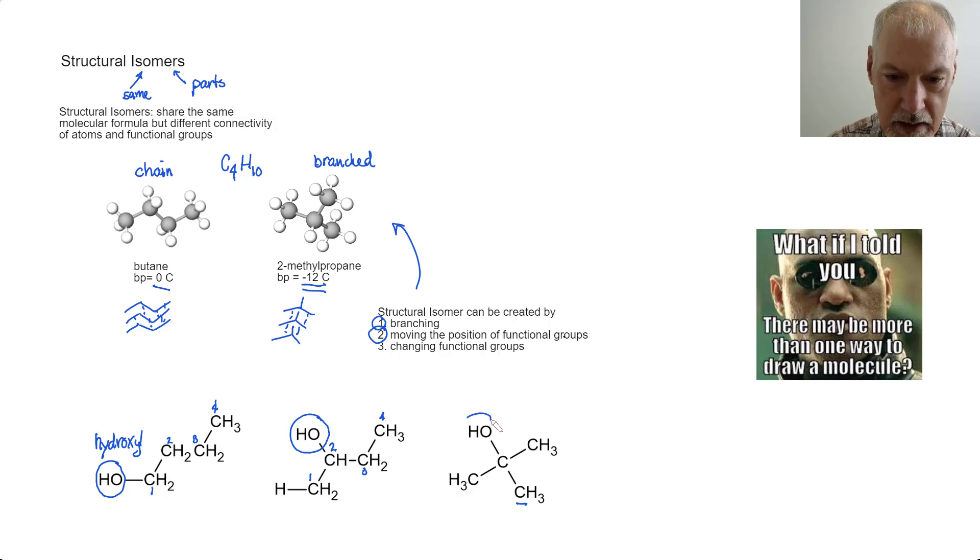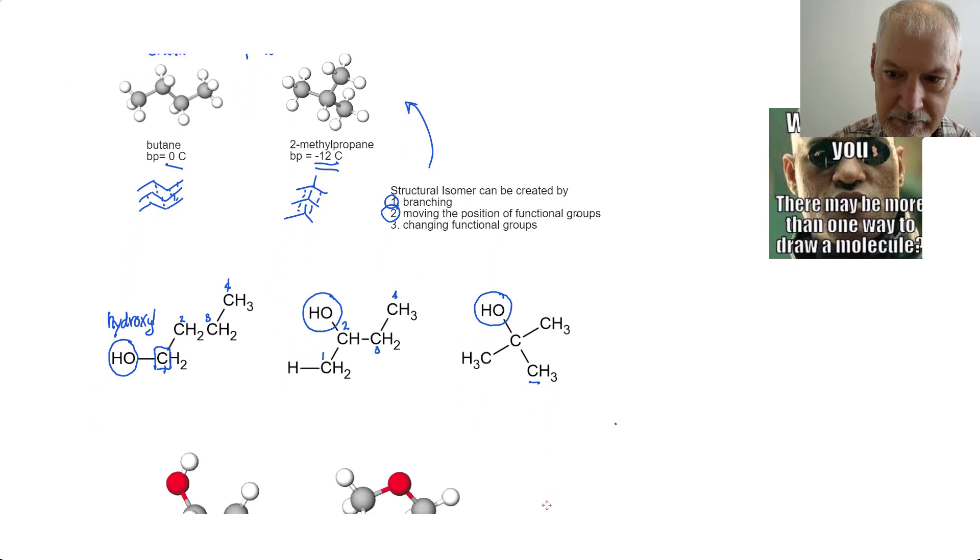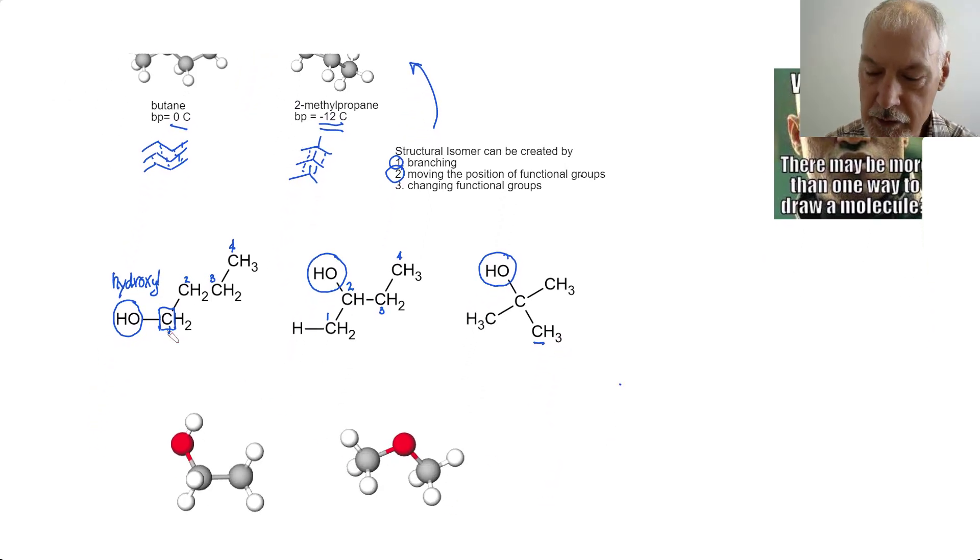This leads to something called different types of carbons. In particular, the carbon I'm interested in is the carbon that is attached to the functional group. Examining this carbon, it's connected to a functional group and it's connected to one other carbon. This is what we call a primary carbon.